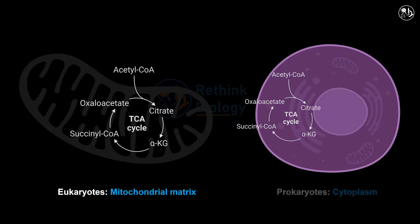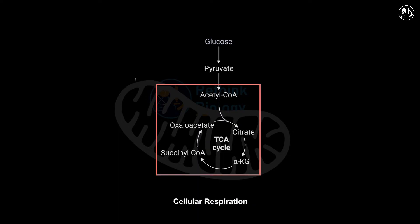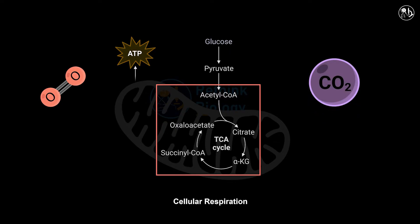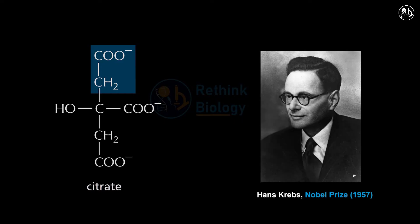Or in the cytoplasm in prokaryotes. The citric acid cycle is the second stage of cellular respiration, which is the process of converting organic molecules into energy. The citric acid cycle requires oxygen and produces carbon dioxide as a waste product. The name of this metabolic pathway comes from the first molecule formed during this cycle's reaction — citrate, or its protonated form, citric acid.